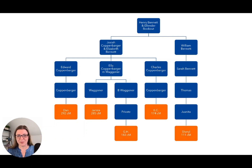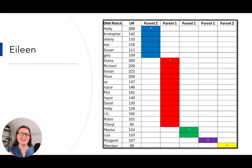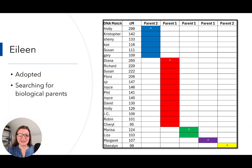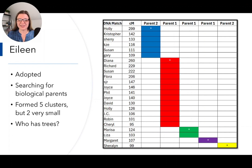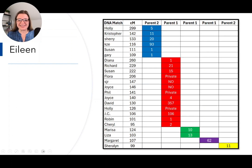Now let's look at an unknown biological parent case. This is Eileen — I've changed her name and privatized her matches, but she's a real-life friend who asked if I could help her identify her biological parents. She was adopted and searching for her biological parents. She had five clusters form: two great clusters and three really tiny ones. My next step is to figure out which matches have trees. I looked at the trees and found a lot of pretty small trees, including some with just one person. There are quite a few private trees, so I'm not even going to look at green, purple, and yellow — we're going to focus on blue and red.